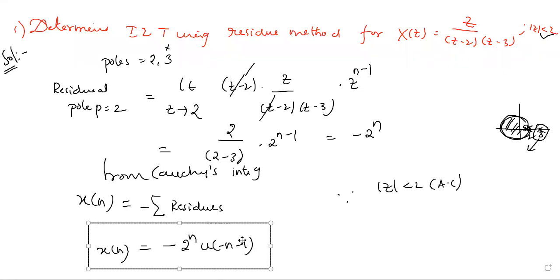This is how we use the residue method. Note that for continuous-time signals we use u of minus t for anticausal, but for discrete sequences u of minus n minus 1 is the standard. At n equal to 0 it should not be included in the anticausal part — it is included only in the causal part by default. The anticausal standard unit step sequence is u of minus n minus 1.